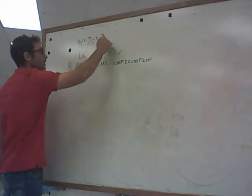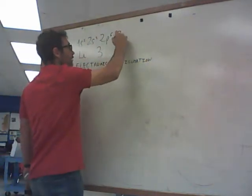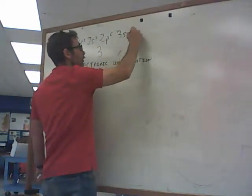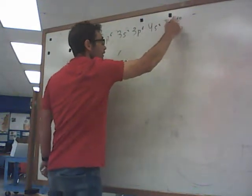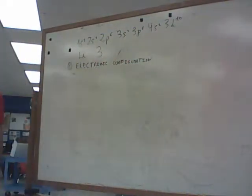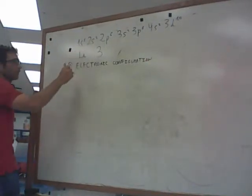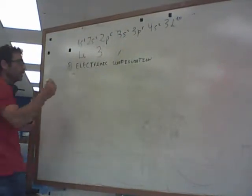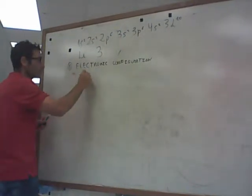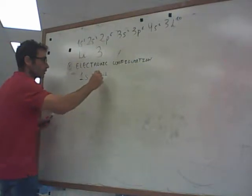Electronic configuration would be, do you remember the line or not? 1s2, 2s2, 2p6, 3s2, 3p6, 4s2, 3d10. Enough with that. Do you remember how I did this? Two from here, one from here. The electronic configuration for lithium would be 1s2, 2s1, okay?